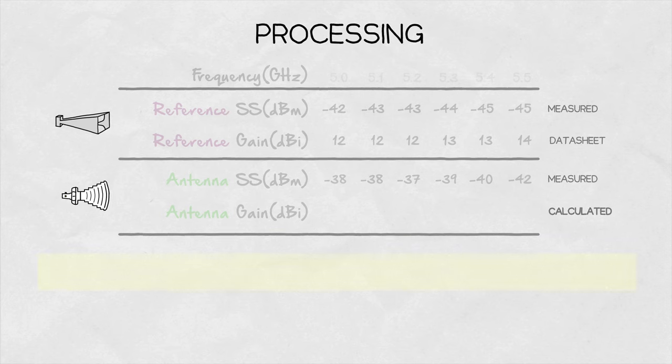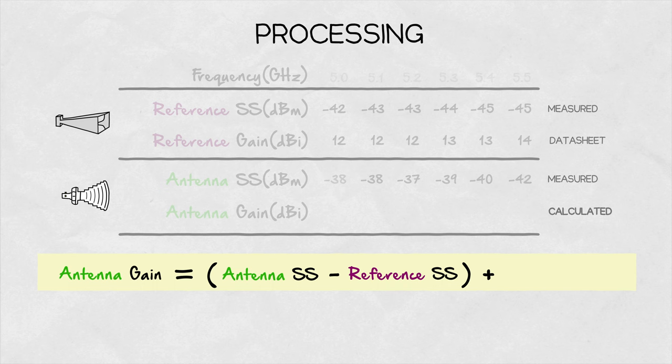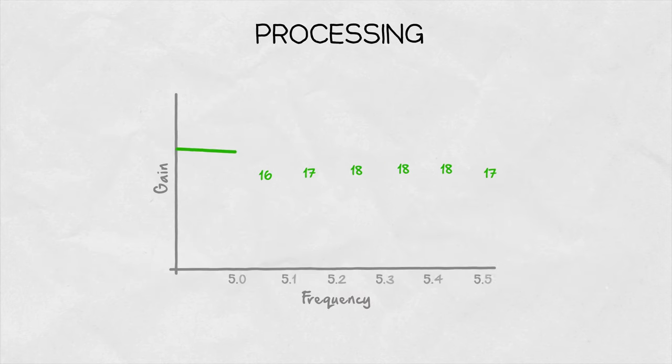After measurement comes processing. Gain is calculated by comparing these signal strengths to recorded reference values and the reference antenna data sheet. By plotting these numbers on an xy chart we get the representation of antenna gain we are all used to.